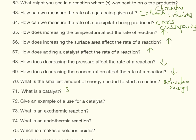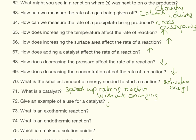What is the smallest amount of energy needed to start a reaction? That is the activation energy. What is a catalyst? That is something that speeds up the rate of reaction without getting involved or without changing. An example of a use for a catalyst: a catalytic converter in a car. An exothermic reaction feels hot and gives out energy.